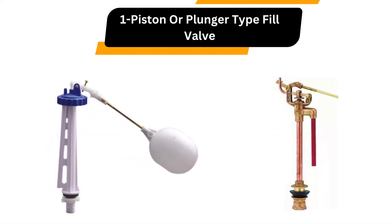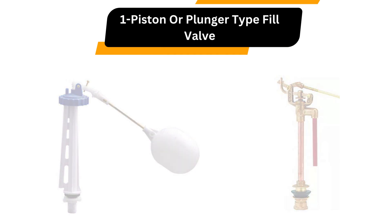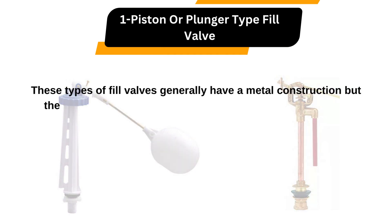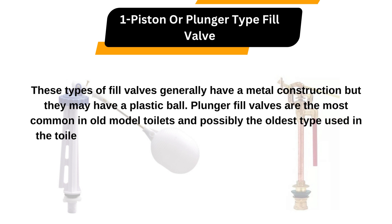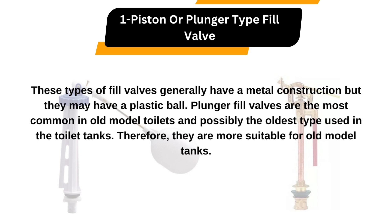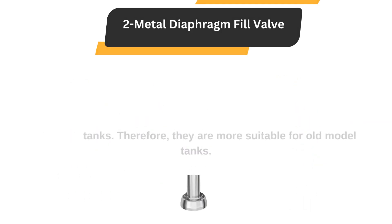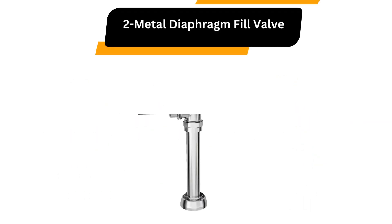Number 1: Piston or Plunger Type Fill Valve. These types of fill valves generally have a metal construction, but they may have a plastic ball. Plunger fill valves are the most common in old model toilets, and possibly the oldest type used in toilet tanks. Therefore, they are more suitable for old model tanks.